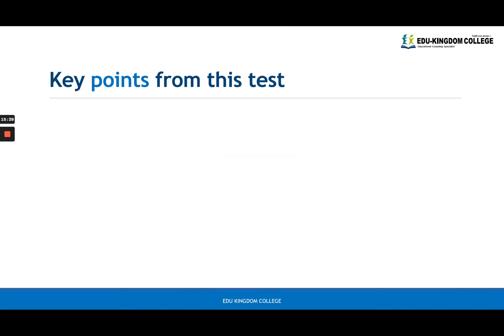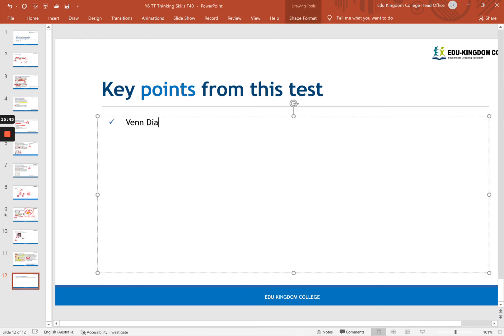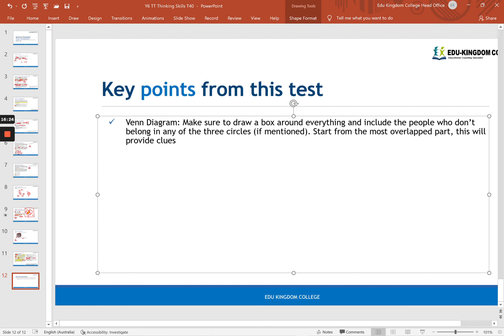Some key points from this test. I want to talk about, first of all, the Venn diagram. So I want you to make sure to draw a box around everything and include the people who don't belong in any of the three circles. If mentioned. So sometimes they don't mention it. And sometimes you have to figure it out by minusing it from the total. And I also want you to start from the most overlapped part. This will provide clues for the more separated parts. If that makes sense, I want you to start from the inside out.